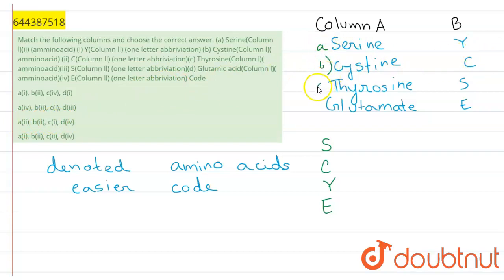So A is matched with 3, B is matched with 2, C is matched with 1, and D with 4. So the right option is the third option here. This is the right option for this question.